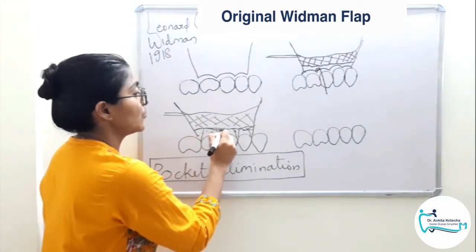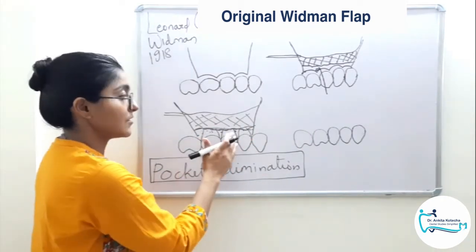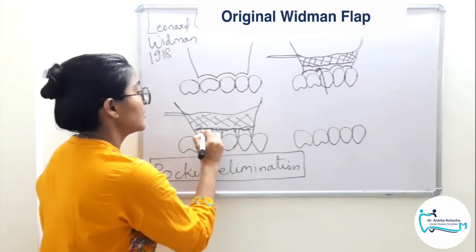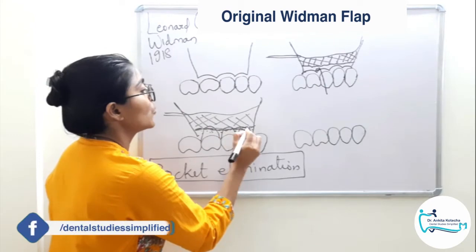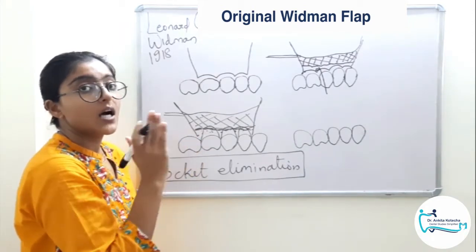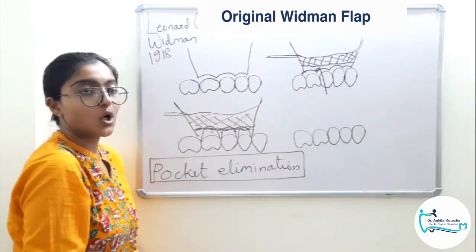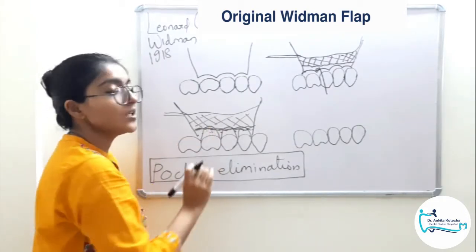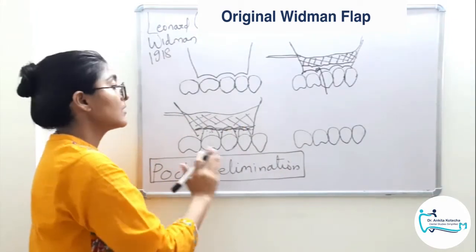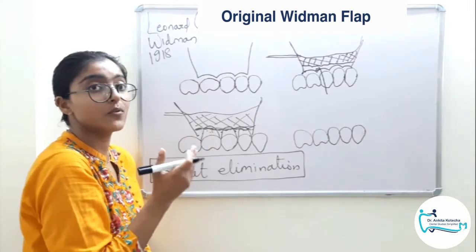Then the marginal alveolar bone, which is deformed due to disease activity — its architecture is damaged — is now altered to achieve ideal anatomic form. Bone recontouring is performed to achieve the ideal anatomic form, although it will be at a slightly more apical level. So two things to do after flap reflection: first, removal of the soft tissue collar; on the roots, debridement; on the bone, contouring. Once debridement and contouring are done, the targets of root cleanliness and ideal anatomic form of the bone are achieved.